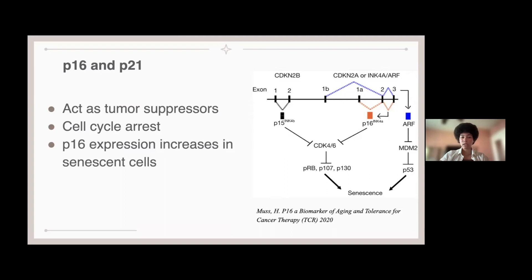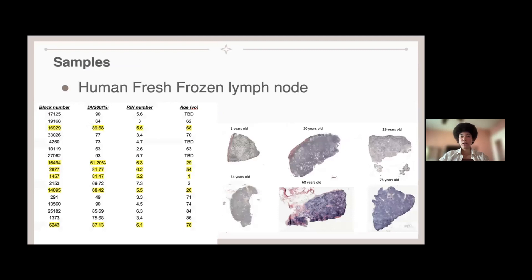And then this diagram simply shows the pathways to senescence, such as the P16 CDK4-6 pathway, and then also the MDM2 P53 pathway to senescence.